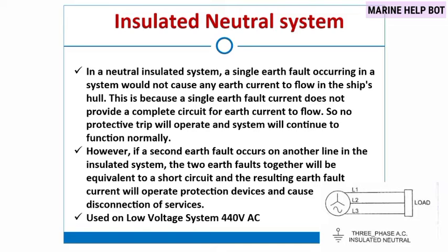In a neutral insulated system, a single earth fault cannot trip the system, so it will work as normal. However, if a second earth fault occurs on another line in the insulated system, the two earth faults together will be equivalent to a short circuit, and the resulting earth fault current will operate protection devices and cause disconnection of the supply. So in summary: a single earth fault will not trip the system, but a second earth fault will behave like a short circuit and activate the protection device, disconnecting the system.